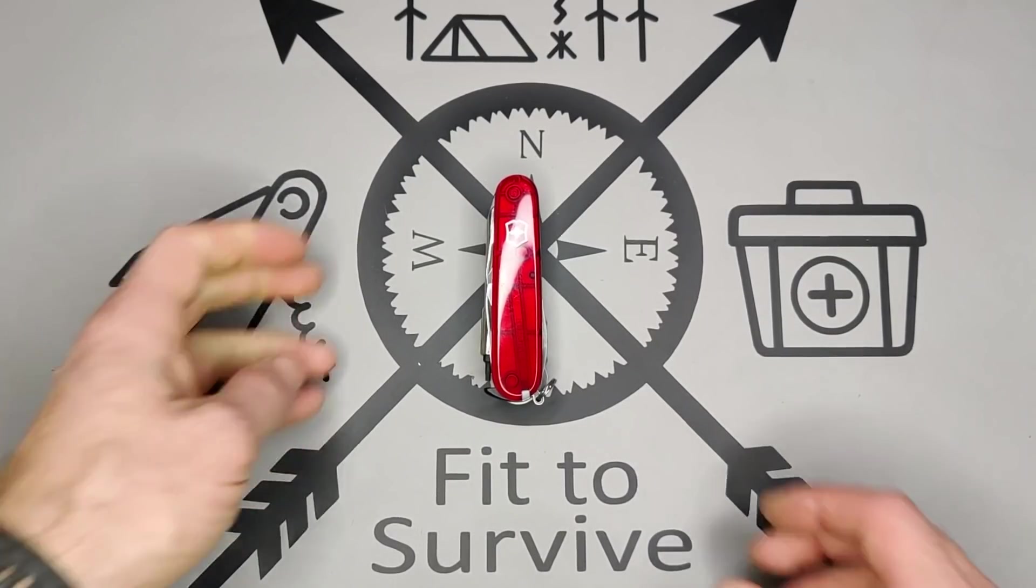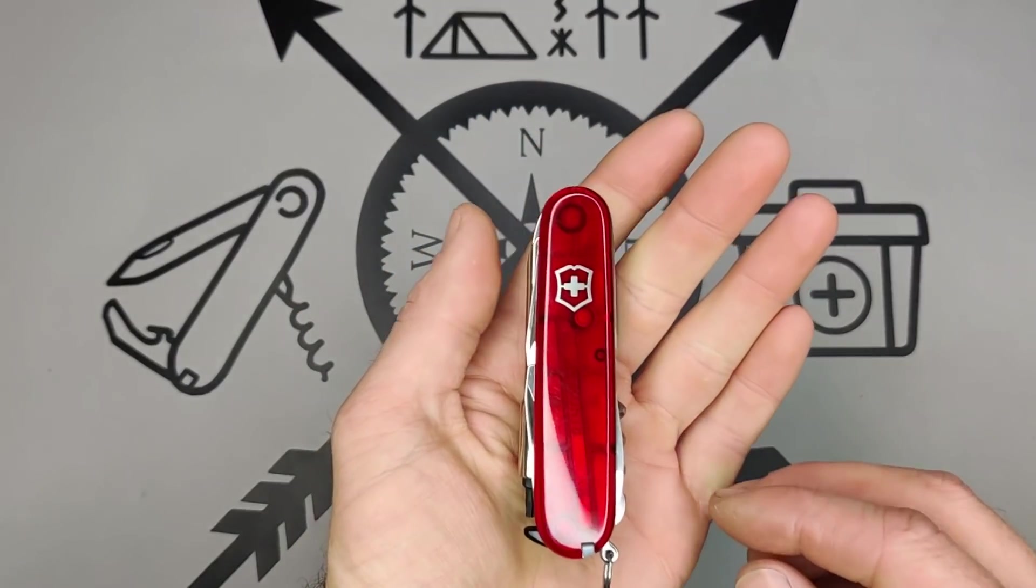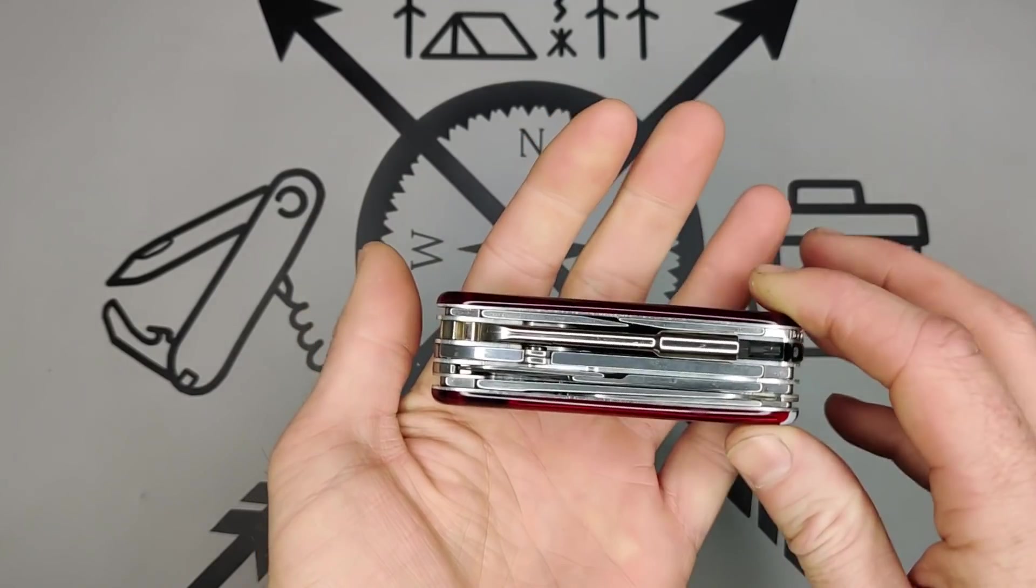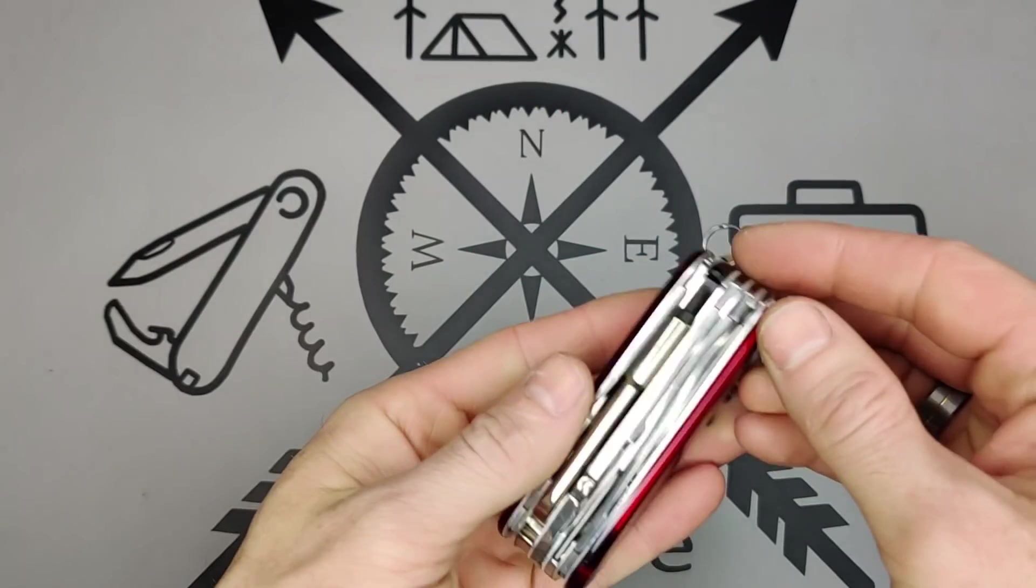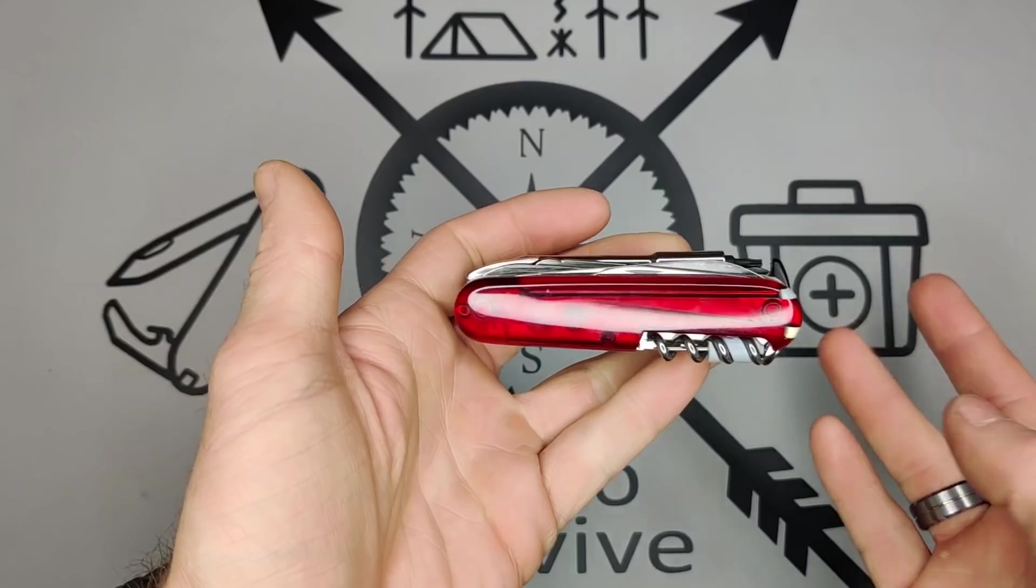Hey, welcome back to the Fitch Survive channel. What we're doing today is taking the blade layer out of this Cybertool M and making like a TSA approved knife.